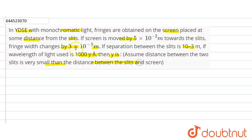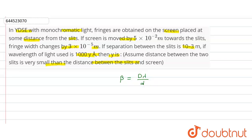See here, the fringe width obtained on the screen is given by: beta = D·lambda / d, where capital D is the distance between the screen and slit, small d is the separation between the slits, and lambda is the wavelength.